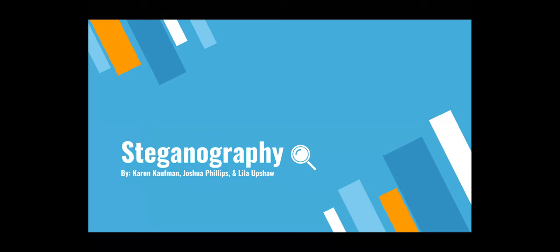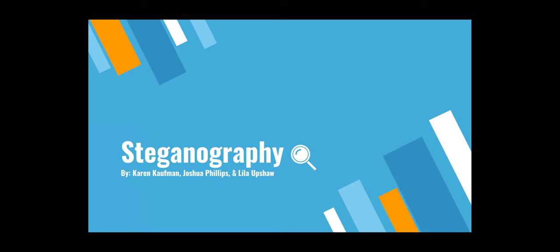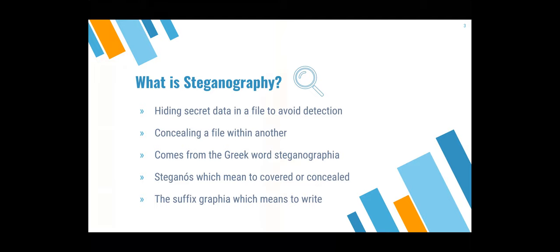Steganography comes from the Greek word steganographia, meaning 'covered writing.' It involves hiding a message within another item so that the presence of the message is indiscernible — you can't see it with the human eye. People who aren't the intended recipient shouldn't even know the message exists. For example, there could be a hidden message in this PowerPoint slide right now, and unless you're the recipient, you would not know it's there.